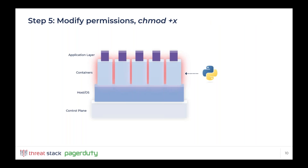Now with the executable downloaded, permissions need to be set. Within the container, the attacker sets permissions on CNRig with chmod +x, which lets the executable run as-is. Remember, containers are supposed to be immutable components in a CD pipeline in a DevOps environment, so changing permissions on a file within the file system should be a pretty strong signal that something is amiss. The attacker does this in a matter of seconds. The question becomes: is anyone watching, and is anyone able to detect that?